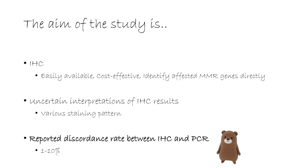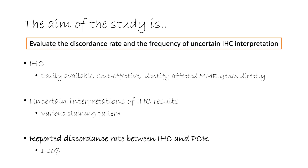In previous studies, the discrepancy rate between immunohistochemistry and PCR was mostly in the range of 1% to 10%. In this study, the authors compared immunohistochemistry data for MMR proteins with results from PCR-based assay of MSI, and evaluated the discrepancy rate and the frequency of uncertain immunohistochemistry interpretations.